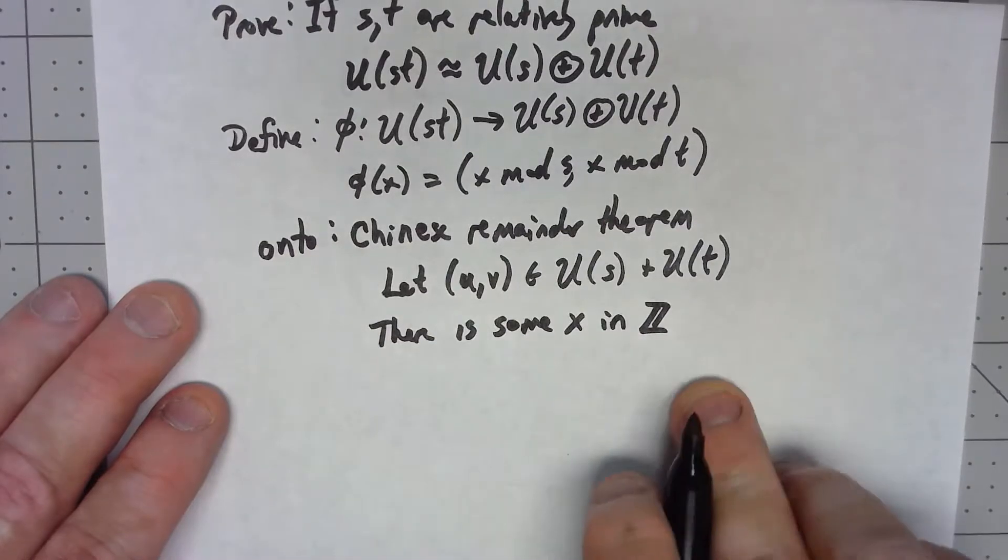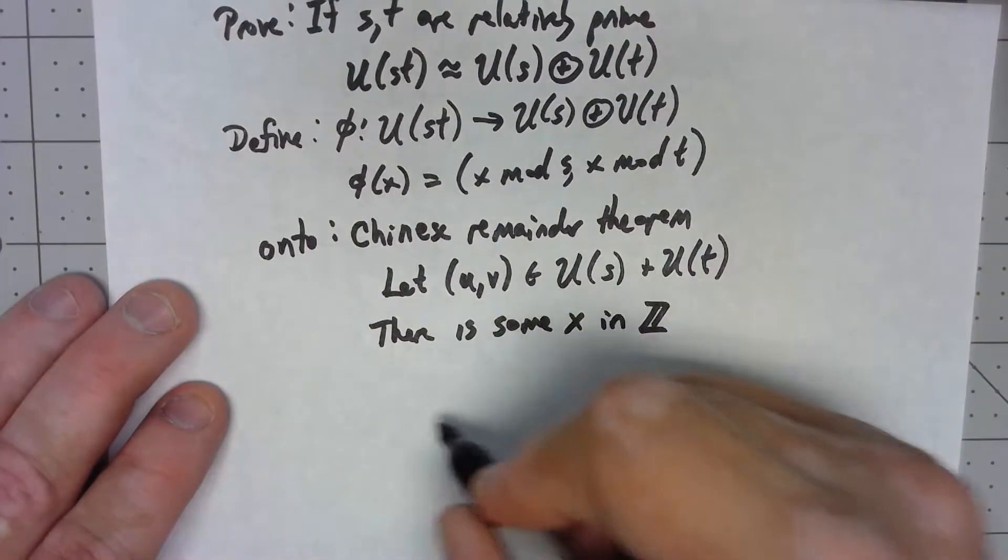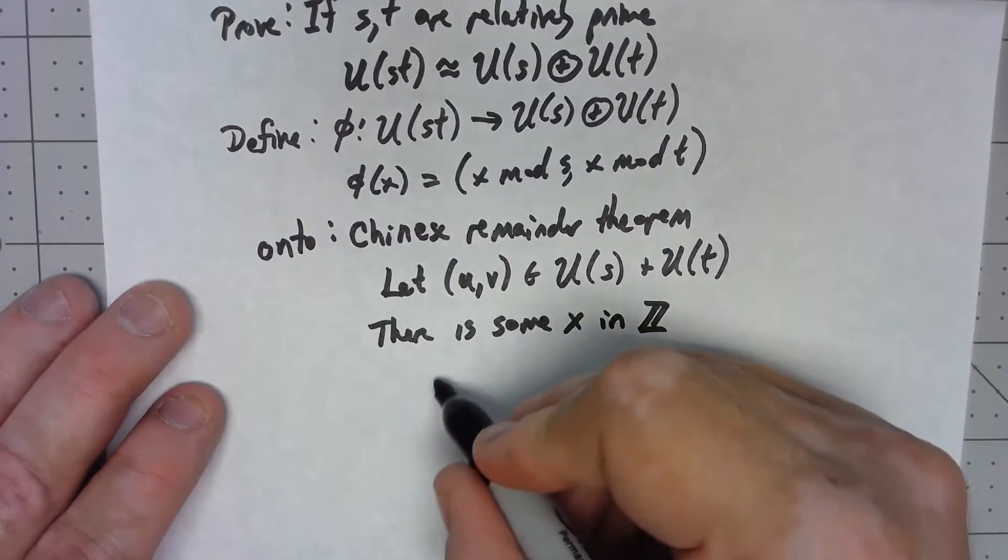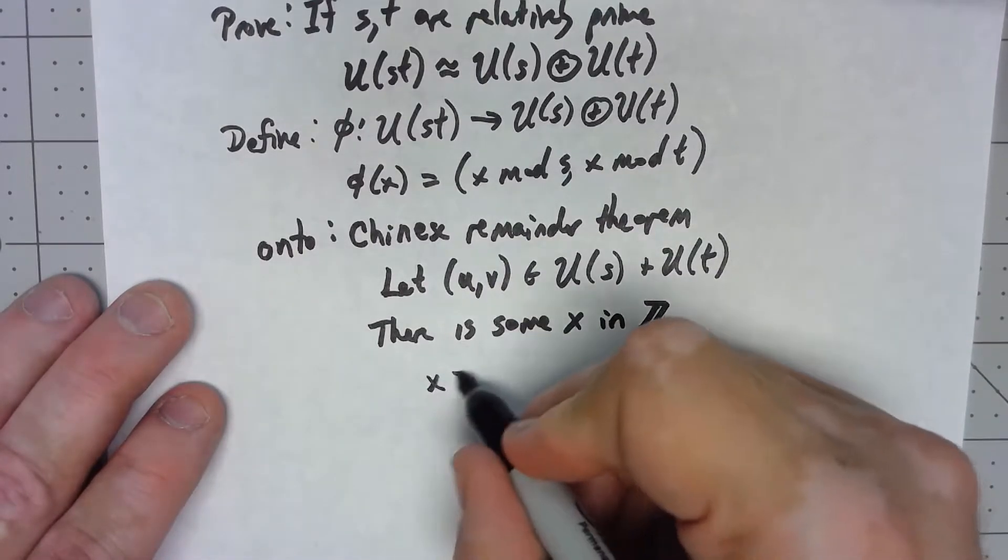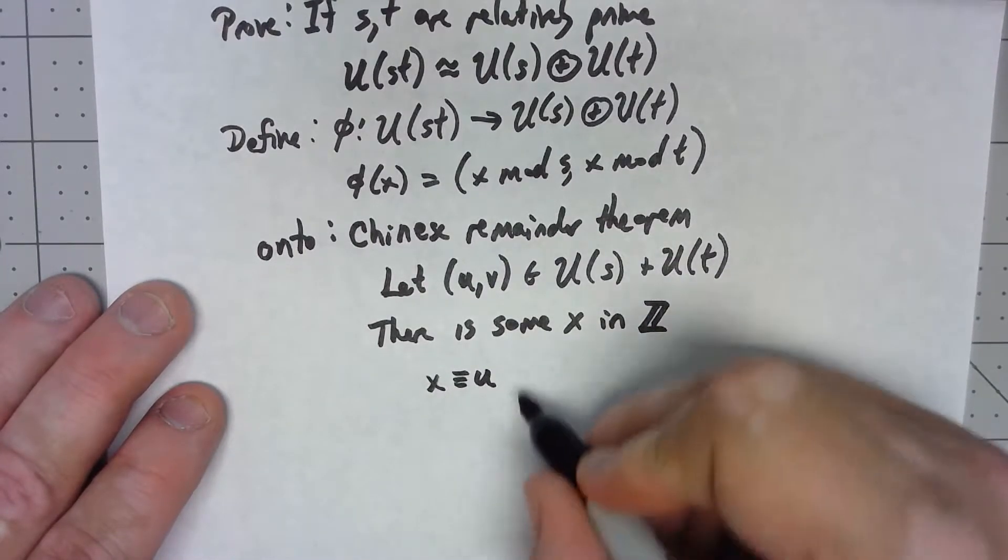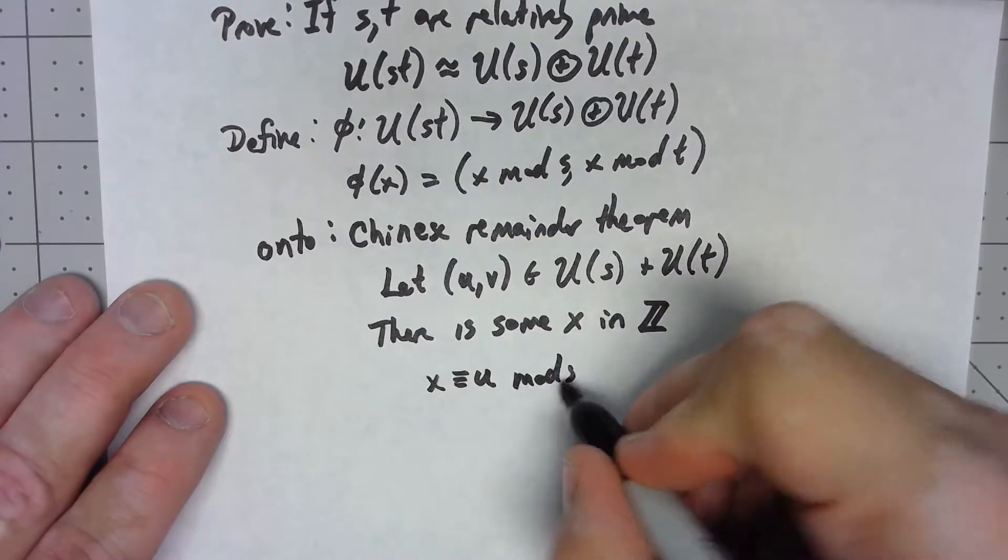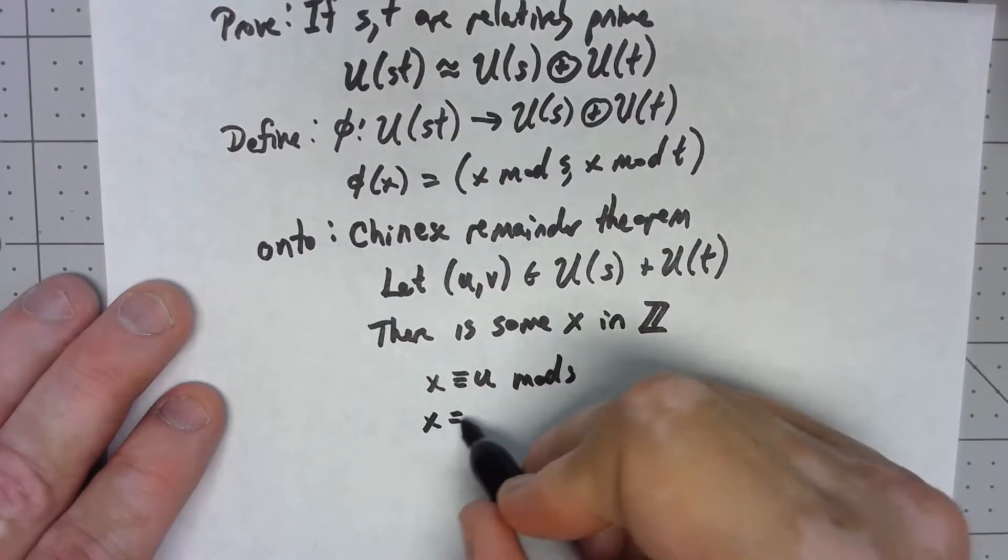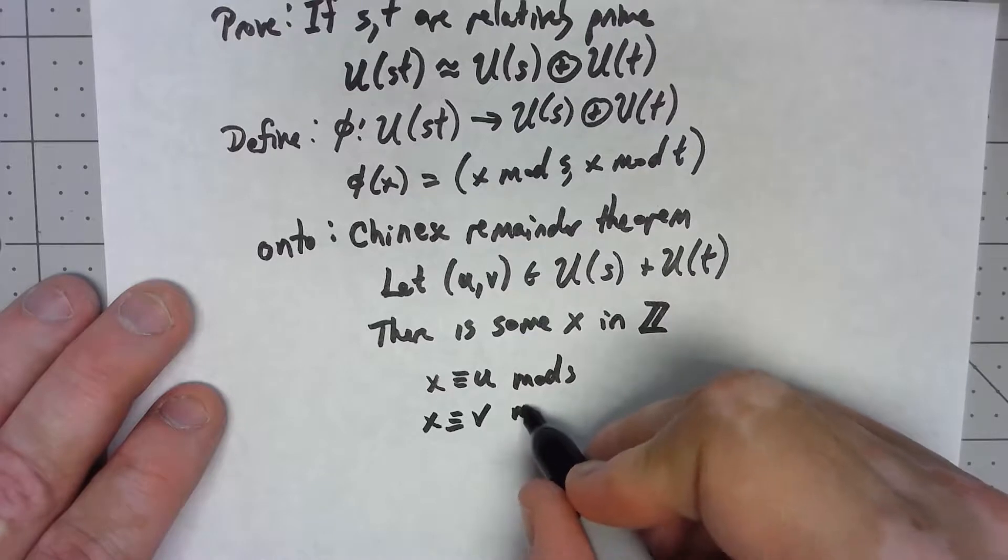There's some x in Z such that x is congruent to u mod s and x is congruent to v mod t.